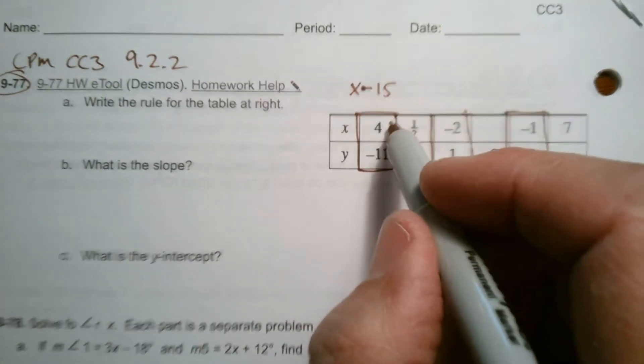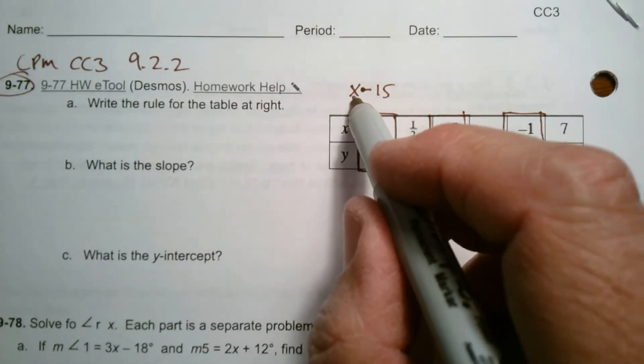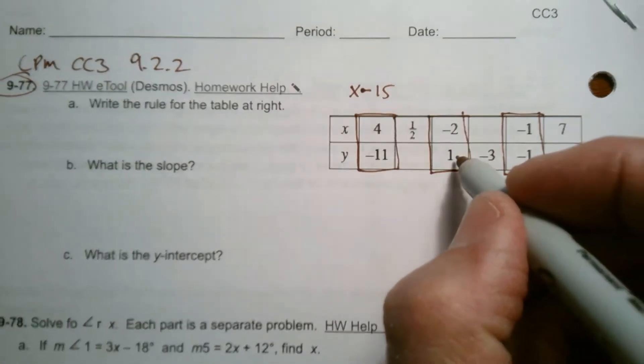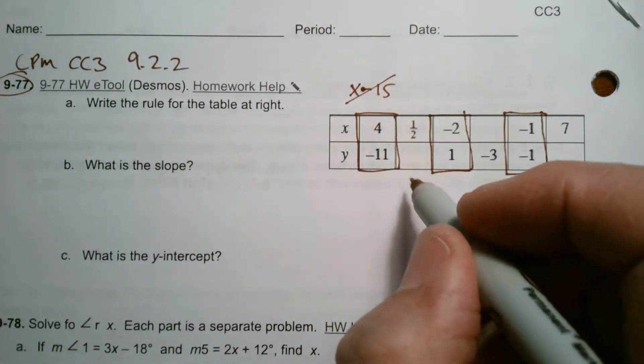Will it work for this? If I put a negative 2 in place of the x, that'd be negative 2 minus 15, which would be negative 17. So that's not it, because that doesn't give me 1. So that can't be it. So I just keep testing.